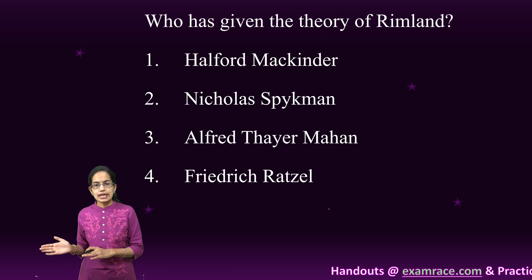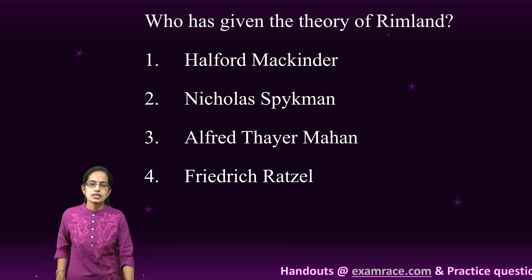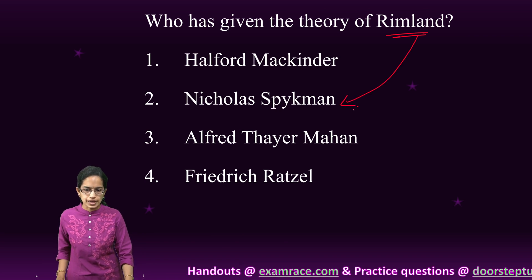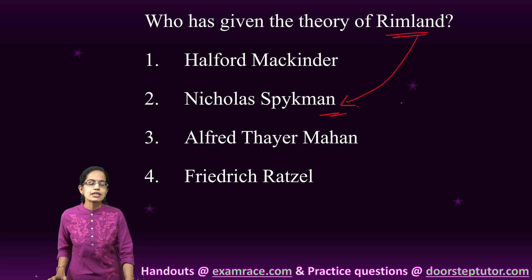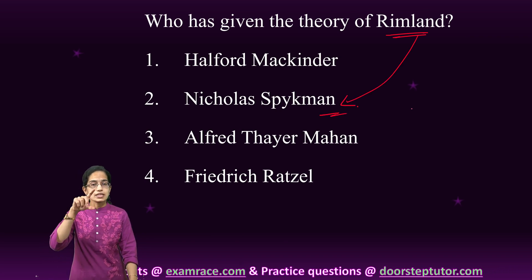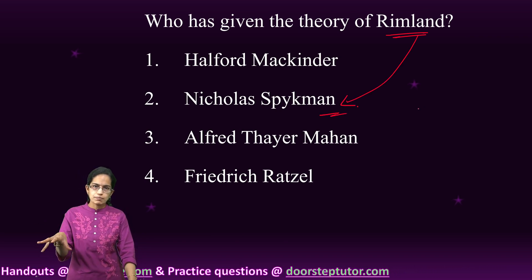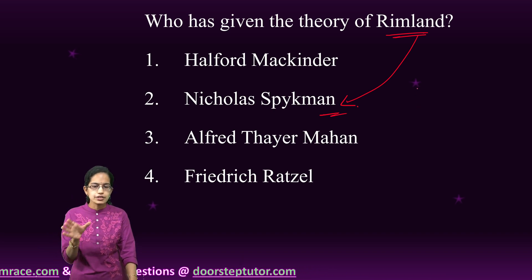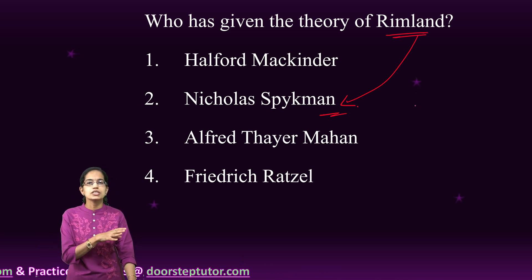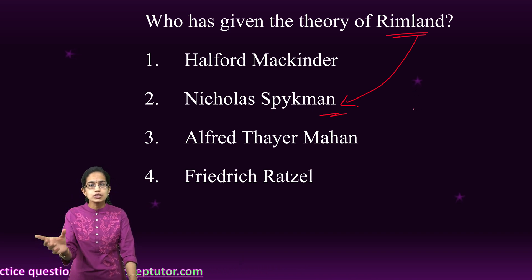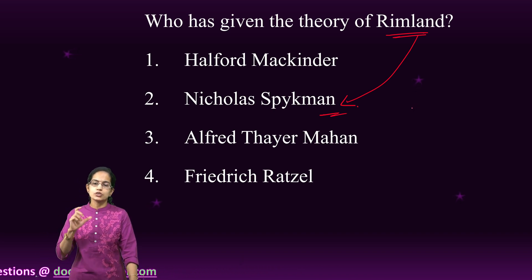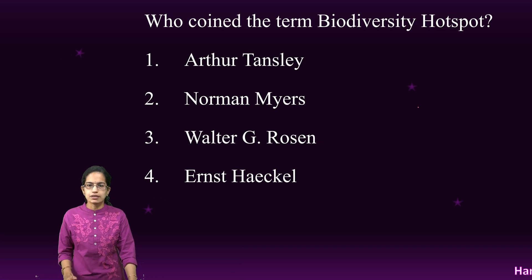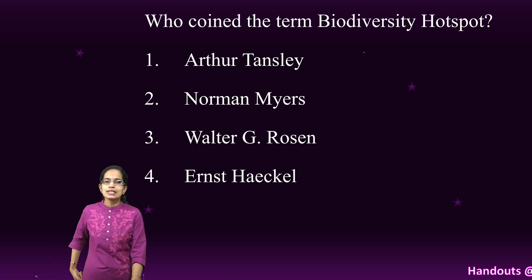The heartland theory was given by Mackinder, however the rimland theory was given by Spykman. Spykman said that who rules the rimland rules Eurasia, and who rules Eurasia rules the world. That was the core idea proposed by Spykman.